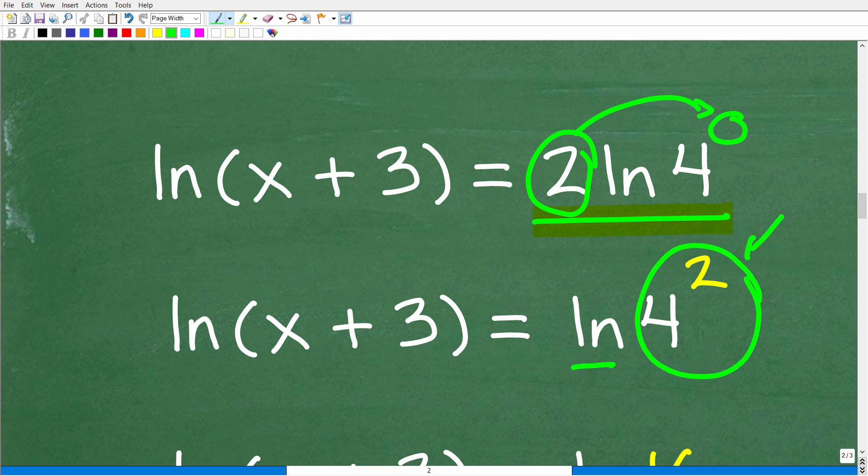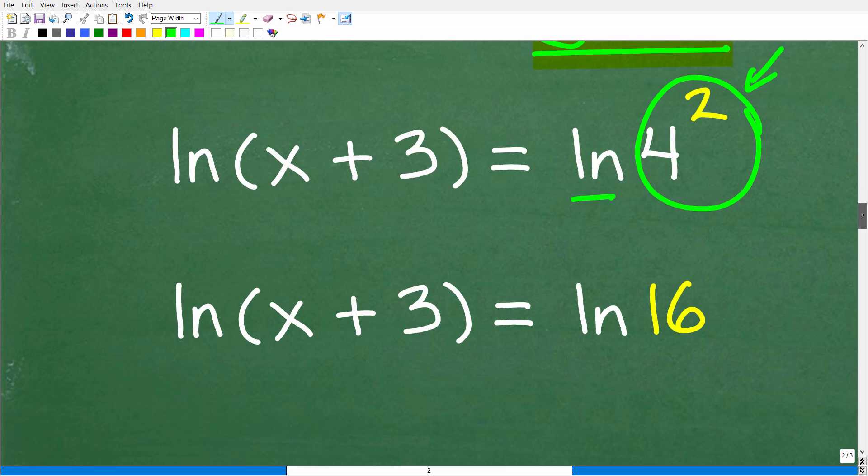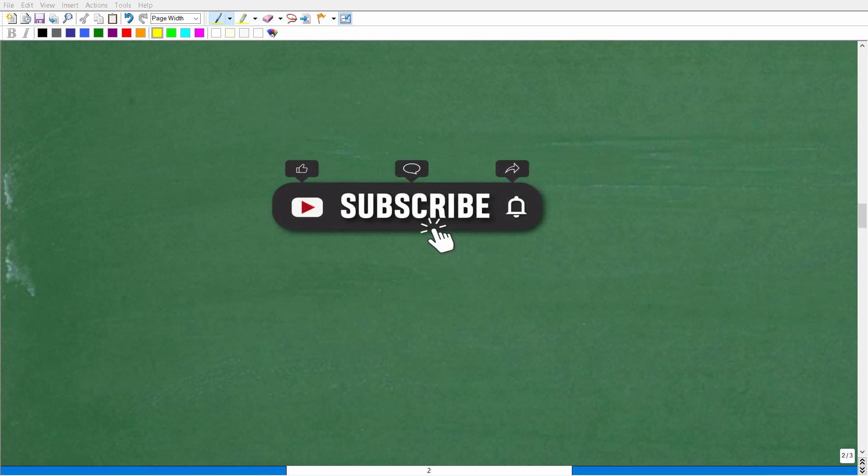Now this is awesome because we know that 4 squared, of course, is 16. And now we have ln(x + 3) = ln16. And now to solve this equation, it's going to be very easy.